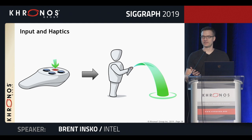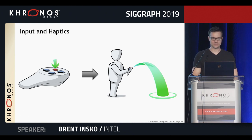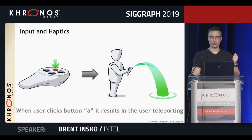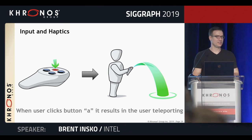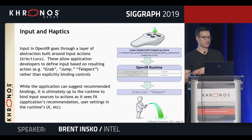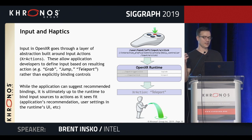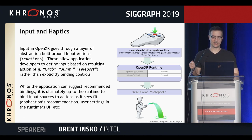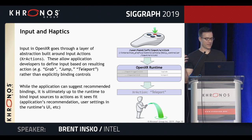The other critical part of the immersive nature of VR is the ability to interact with and manipulate the environment. The input in OpenXR goes through a layer of abstraction built around input actions. You define the physical buttons from the input controller separately from the actions you want them to do. The application will suggest bindings to the runtime — for example, button A to teleport and the trigger to fire — but it's ultimately up to the runtime to bind these input sources with the actions.